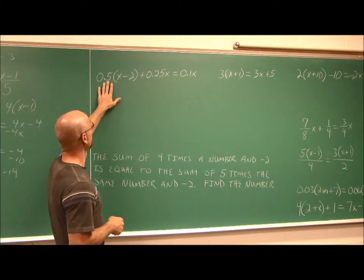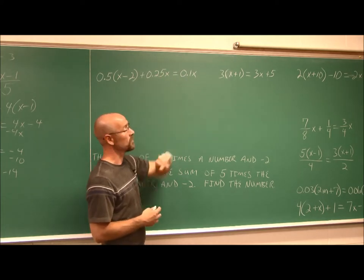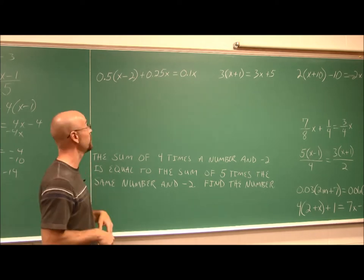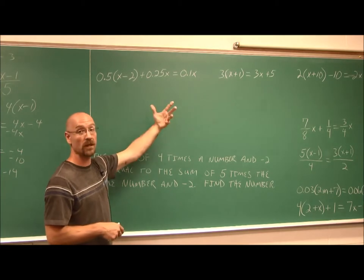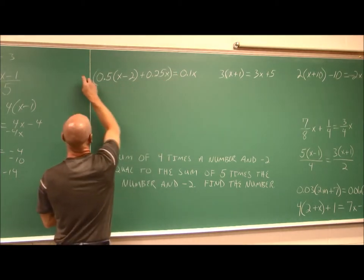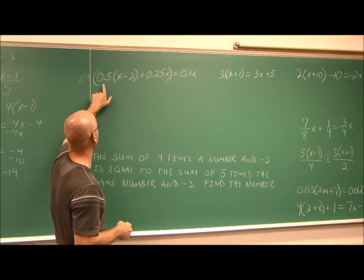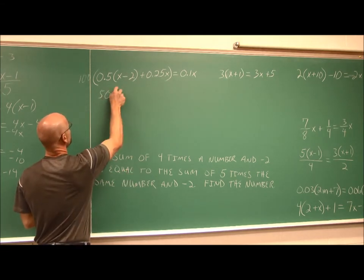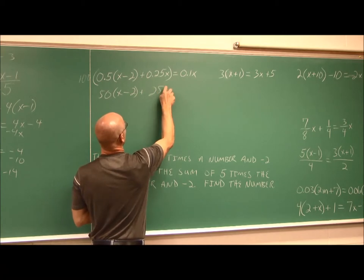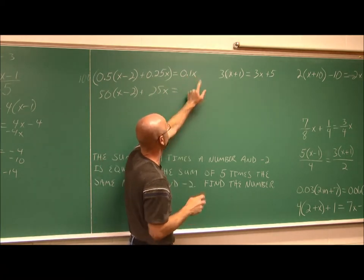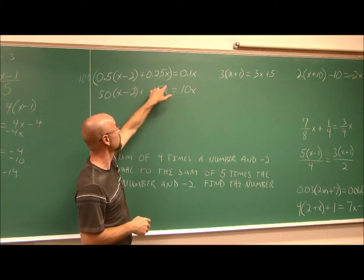What if we have decimals? In our decimal system there are factors of 10. The smallest place value here is hundredths, so I multiply the entire equation by 100. When I multiply each term by 100, I move the decimal two spots: 0.5 becomes 50 times x, 0.25 becomes 25, and 0.10 becomes 10x. Now we have no more decimals.